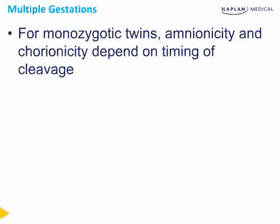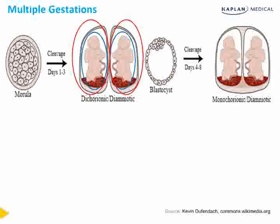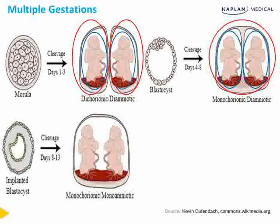The concept of amnionicity and chorionicity is very important for the management of the multiple gestation pregnancy. In monozygotic twins, amnionicity and chorionicity ultimately depend on the timing of cleavage. If cleavage occurs on days one through three, we end up with a dichorionic-diamniotic twin pregnancy, with each twin having their own amniotic sac and their own placenta. When cleavage occurs on days four through eight, we end up with a monochorionic-diamniotic twin pregnancy, with each twin having their own amnion but sharing a placenta. When cleavage occurs on days eight through thirteen, we end up with a monochorionic-monoamniotic twin pregnancy, occurring in only one percent of monozygotic twins, where the fetuses share both an amnion and a placenta.